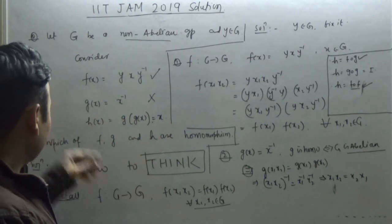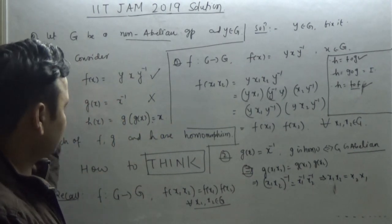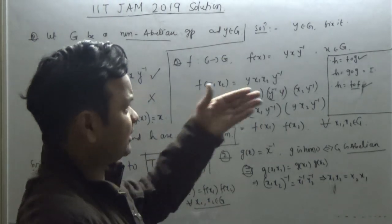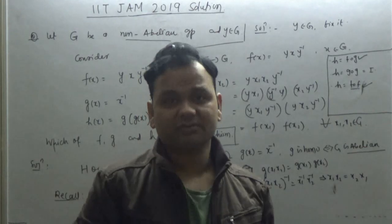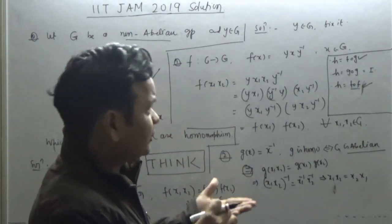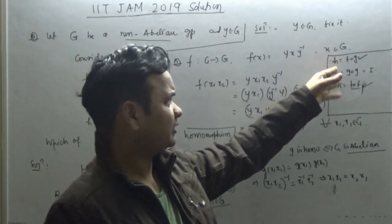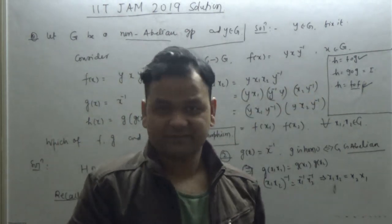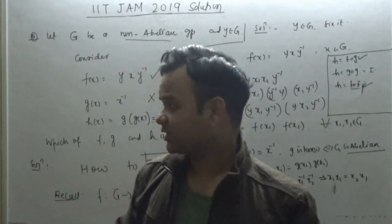So this is a homomorphism. In this case, f and h are homomorphisms, but g fails to be a homomorphism if this is the case. But I am not sure what was in the options, so I am not going to comment on that. But I have given you three exercises: figure out which of the following are homomorphisms. This is how you approach this question. Look how easy this question was.